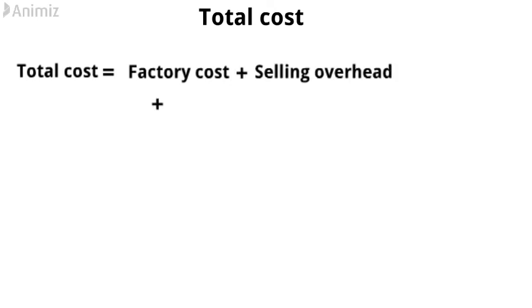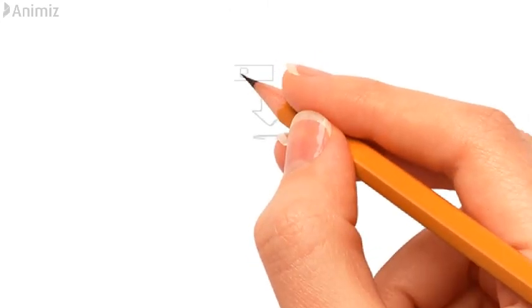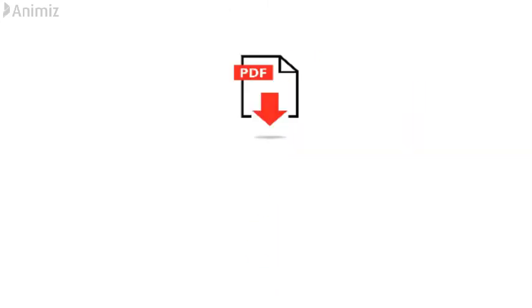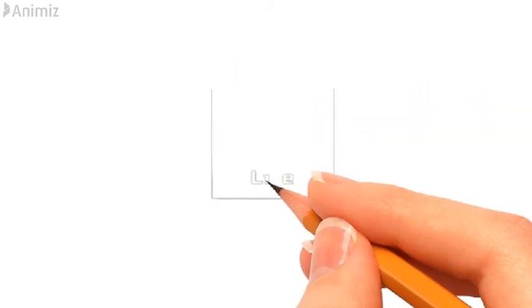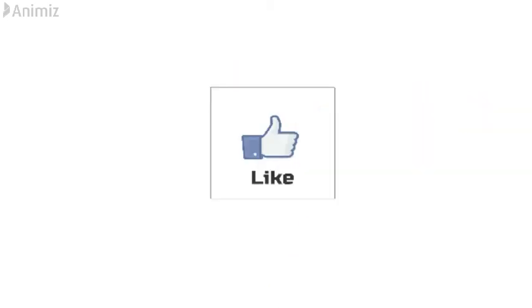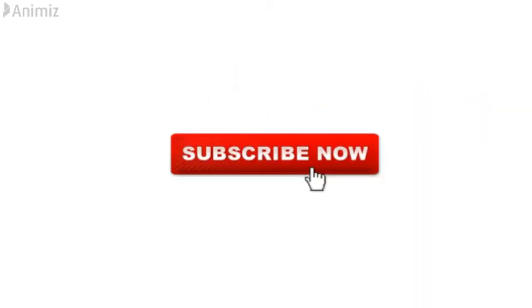Total Cost equals Factory Cost, plus Selling Overhead, plus Distribution Overhead, plus Administration Overhead. If you want to download the PDF, go through the link in the description. Like the video and support my work by subscribing to my channel.